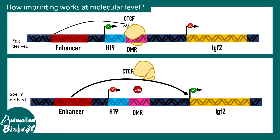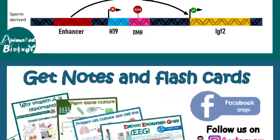This is a simplified overview of how methylation and genomic imprinting work. In future videos we'll delve into more details to understand the process of imprinting and how it is associated with disorders. There are disorders like Angelman syndrome and Prader-Willi syndrome which are actually imprinting defect disorders. You can click the 'i' button to find those videos. See you in the next video.